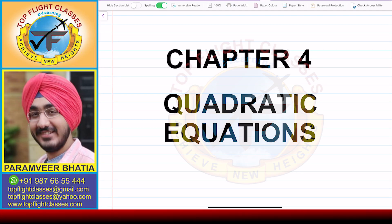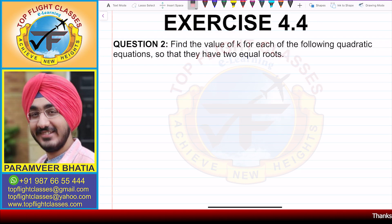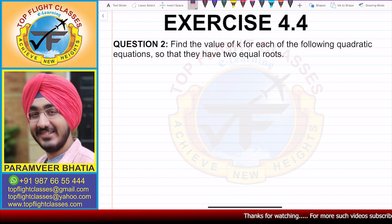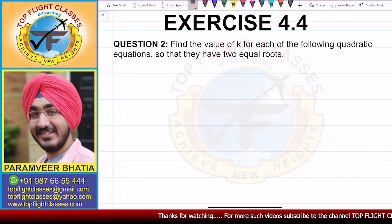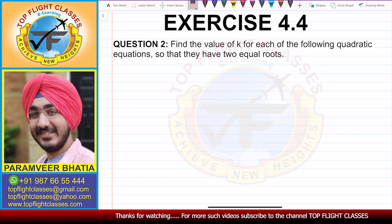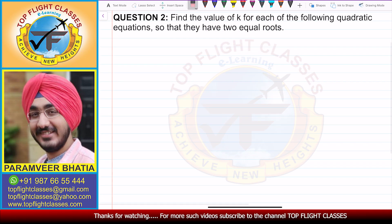Hey guys, welcome to my channel Top Flight Classes. In this video we are going to solve question number two of Exercise 4.4. Question number two says: find the values of k for each of the following quadratic equations so that they have two equal roots.